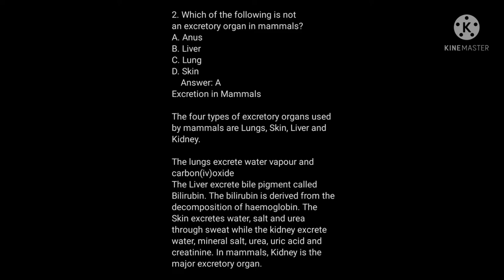Question number two: which of the following is not an excretory organ in mammals? A) Anus, B) Liver, C) Lung, D) Skin. The answer is A, which is anus. Excretion in mammals — the four types of excretory organs used by mammals are lungs, skin, liver, and kidney.